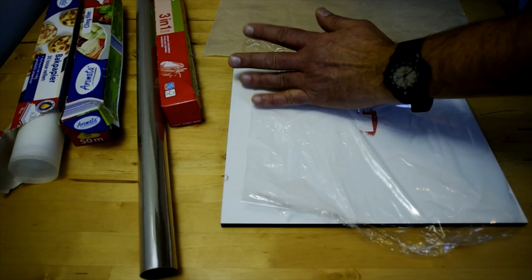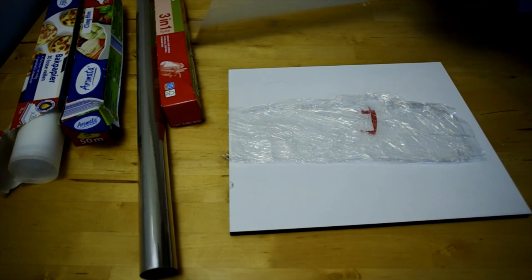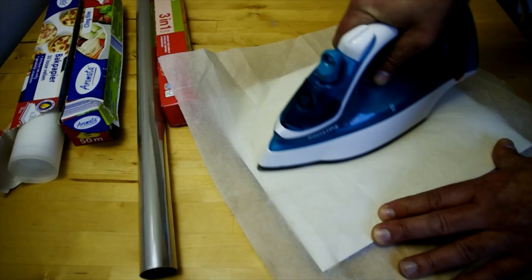Fold it down on a smooth surface and cover the top layer with baking paper to prevent the film melting onto the iron. Play around with the temperature and speed of the iron to get the film you want.